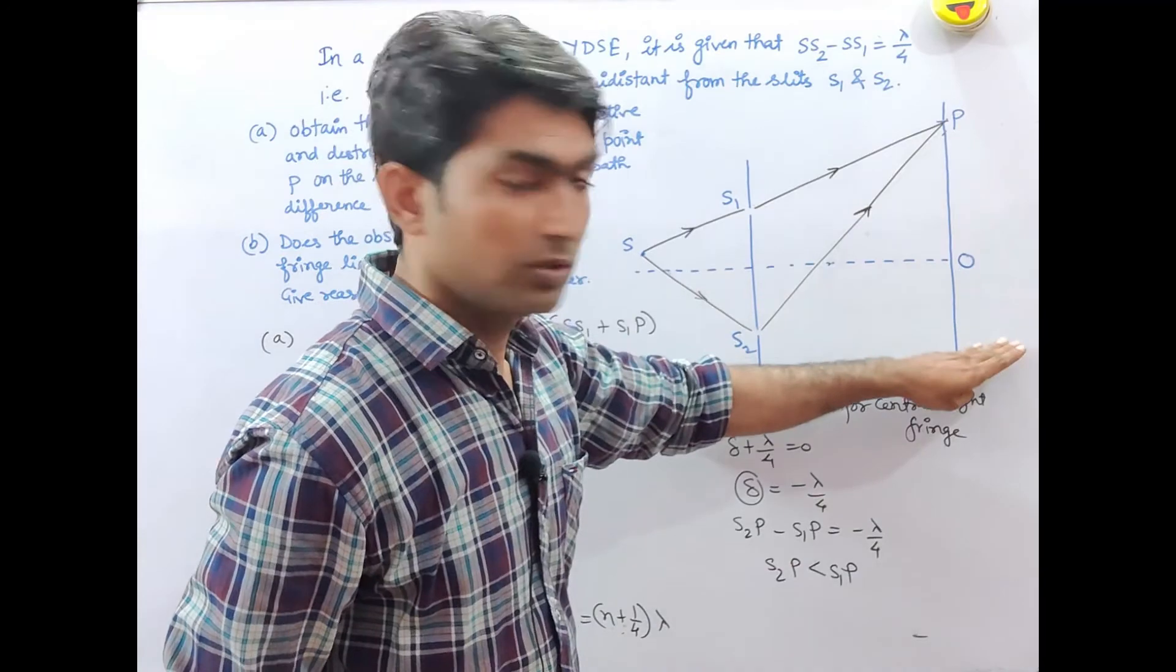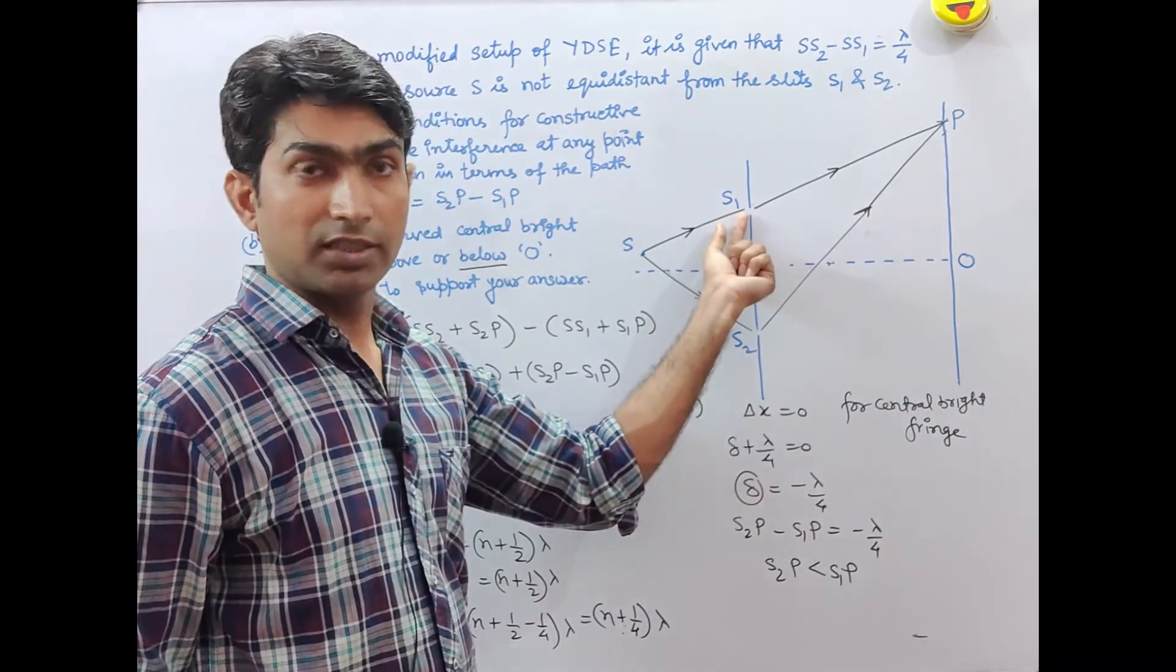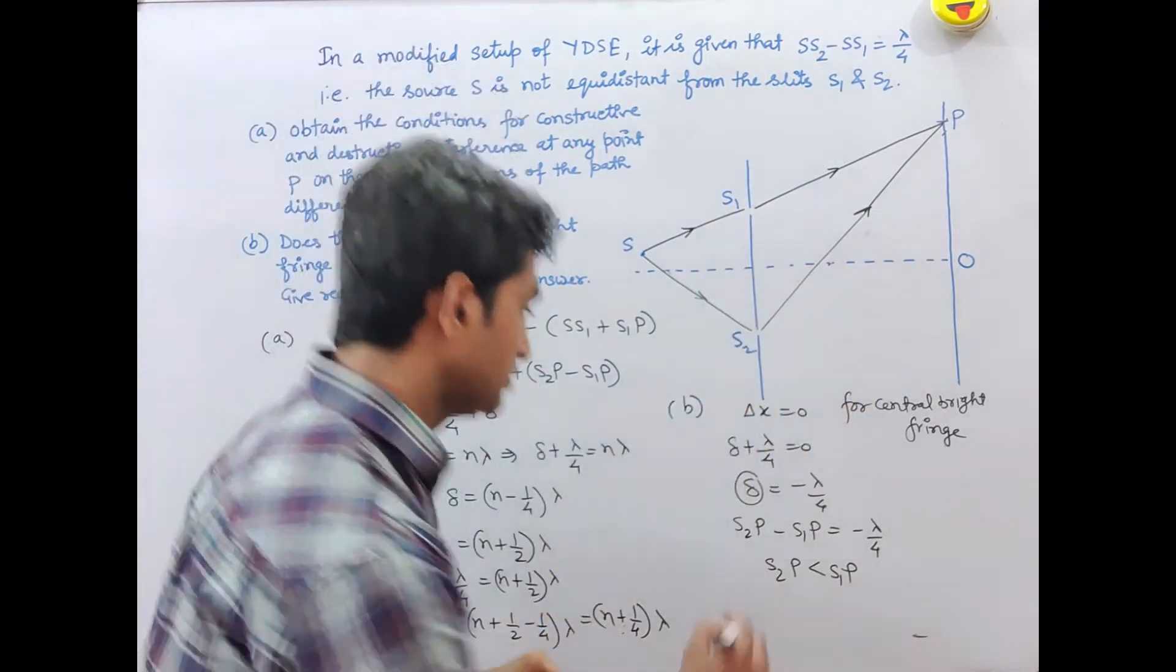When point P is below rather than above, the length from S2 should be less, so it should be closer to S2. It should be more from S1, so it should be farther from S1.